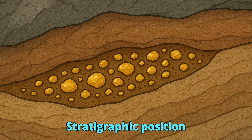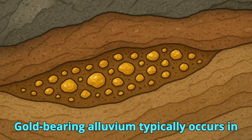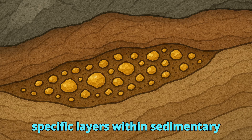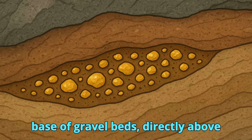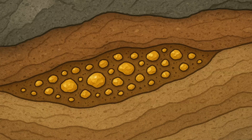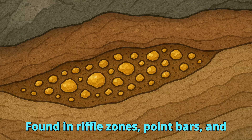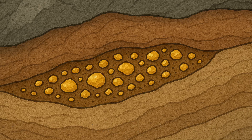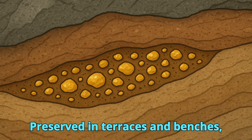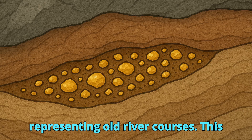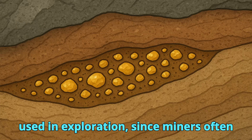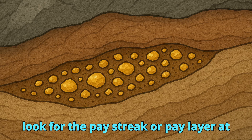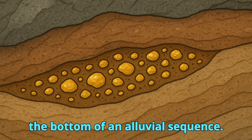5. Stratigraphic Position. Gold-bearing alluvium typically occurs in specific layers within sedimentary sequences: concentrated at the base of gravel beds directly above bedrock or clay — false bedrock; found in riffle zones, point bars, and channel bends where water loses energy; and preserved in terraces and benches representing old river courses. This stratigraphic control is a key property used in exploration, since miners often look for the pay streak, or pay layer, at the bottom of an alluvial sequence.